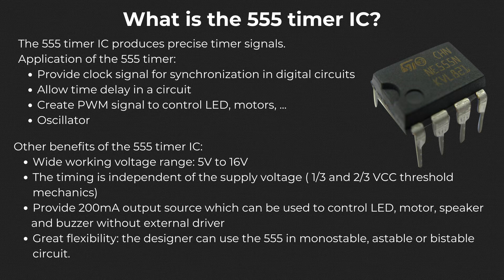It has a wide working voltage range from 5 volts to 16 volts. The timing is independent of the supply voltage, as it uses one-third and two-thirds of VCC as the threshold. It provides 200 milliamp output source, which can directly be applied to drive components like LEDs or motors. You can use the 555 timer IC in monostable, astable, or bistable circuits.